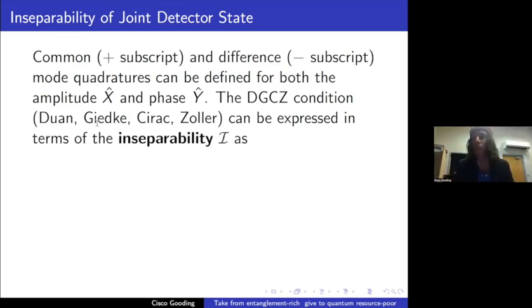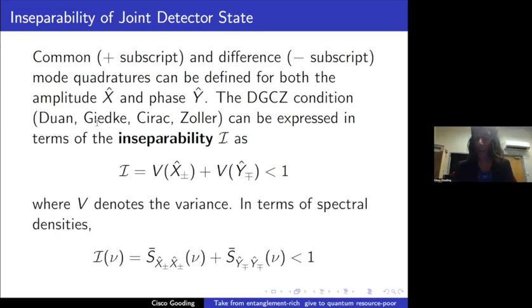A quantity that people might be familiar with from other contexts is the separability. Two minutes, let's go. Yeah, excellent. I'm right at the end. This is a quantity that basically tells us what the squeezing in separate variances in these joint variables is telling us about whether we have entanglement or not. This is basically just a sum of variances for both the joint sum variable of the amplitude and difference variable of the phase or vice versa. And this is the quantity that we're going to use. It can be written in terms of spectral densities to determine whether we have entanglement in our system.